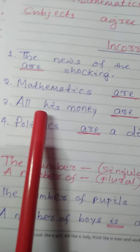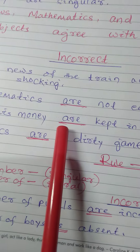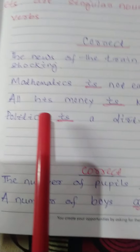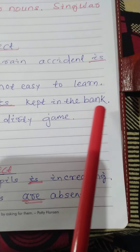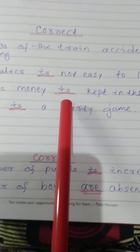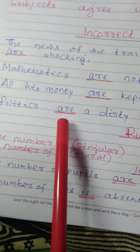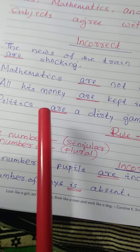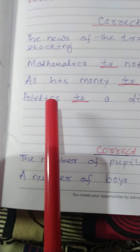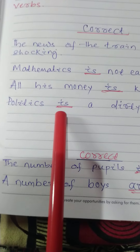Incorrect: 'All his money are kept in the bank' — 'are' is incorrect. Correct: 'All his money is kept in the bank' — 'is' is correct. Incorrect: 'Politics are a dirty game' — 'are' is incorrect. Correct: 'Politics is a dirty game' — 'is' is correct.